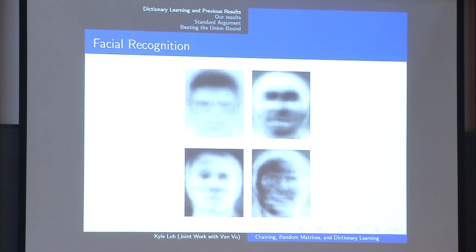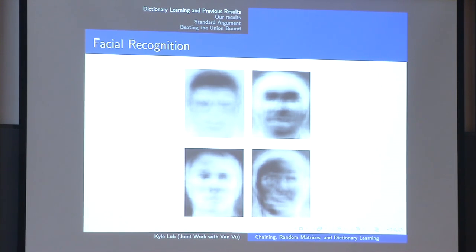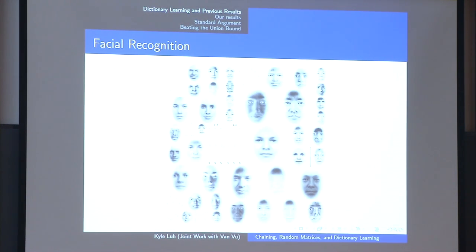A more interesting one is facial recognition. In this case the test data is obvious — we take a bunch of shots of people's faces and try to learn a dictionary from those. This is some test data and some of the dictionary elements generated from it. Some of you might think you're too good-looking to be sparsely represented by these, and I'm not saying you're wrong, but most faces can be represented by a linear combination of six or seven of these, which is quite surprising.